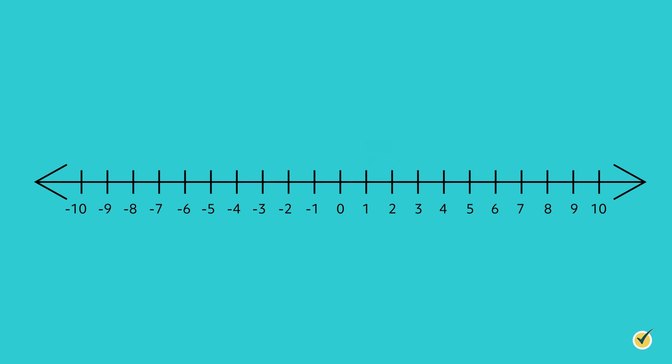The most important number on a number line is 0, because every other number is based off of how far away it is from 0. Numbers to the left of 0 are negative, and numbers to the right of 0 are positive.